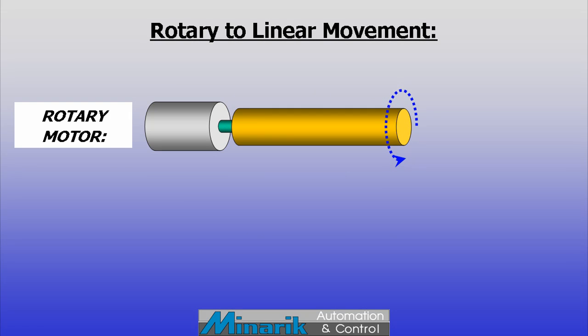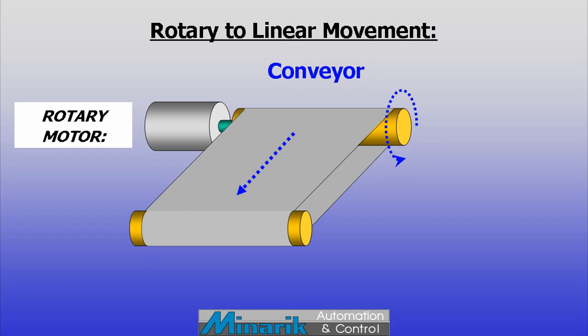For linear movement, the common approach is to convert rotation into linear motion mechanically. Rotary motors can turn belts or chains, direct drive or pinch rollers. When used with other rollers, this creates linear conveyor type movement.